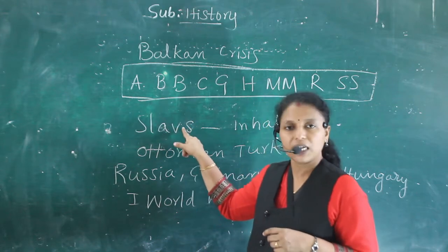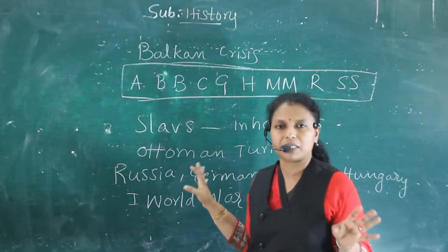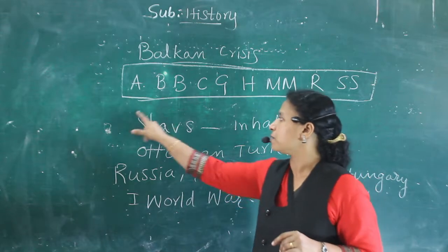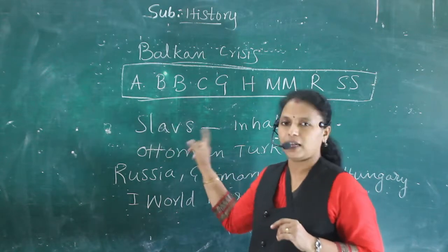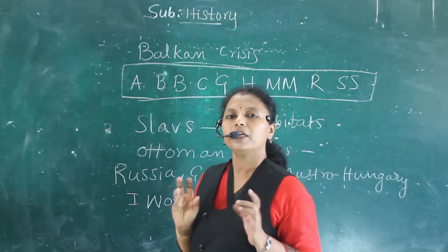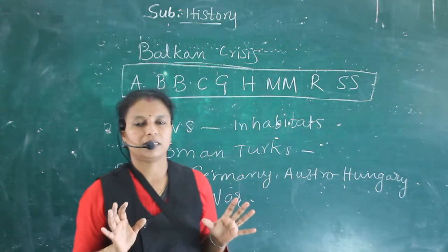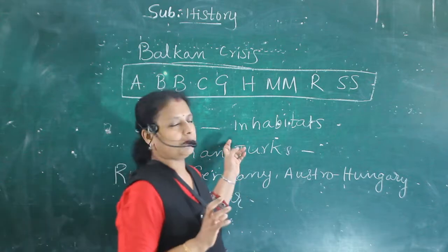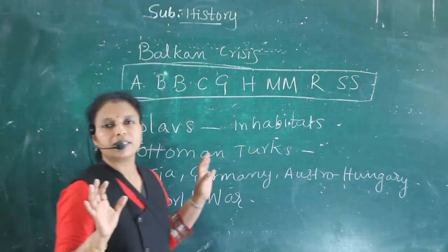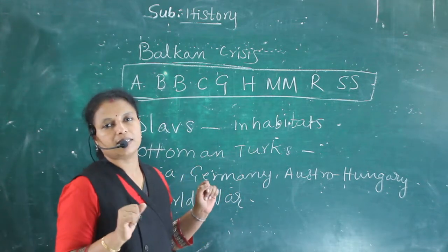If we use 'e' here, then it will be a mistake. So keep proper attention — SLAVS. The original inhabitants were the Slavs. This Balkan area was a system of around 10 states.